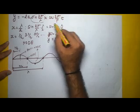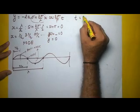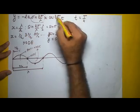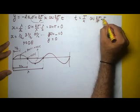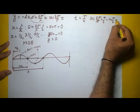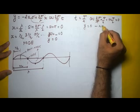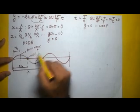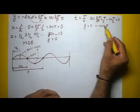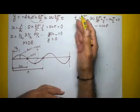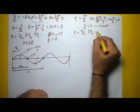We can do the same analysis with the time term. If we take t = T/4, then cos(2π/T · T/4) = cos(π/2) = 0, so the entire term becomes 0 and y = 0 — we get a node. You can understand it either way, using position x or time t. Similarly, if you take t = T/2, 3T/2, and so on, you will get antinodes.